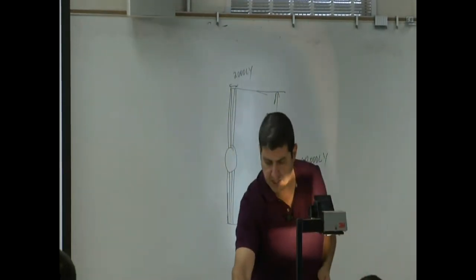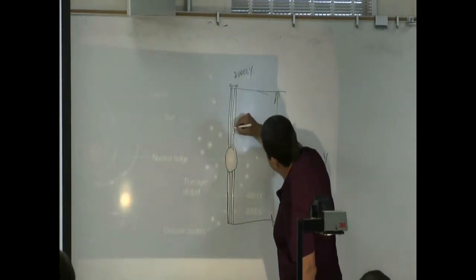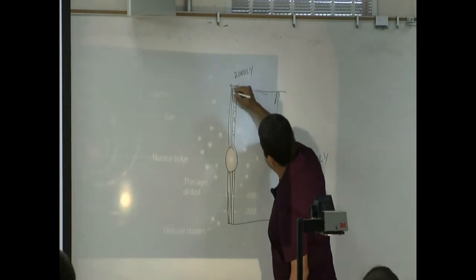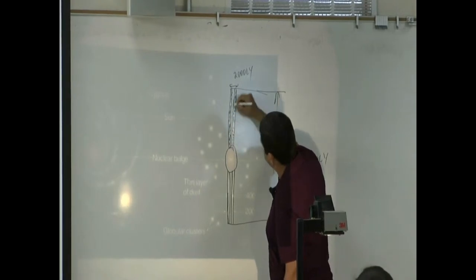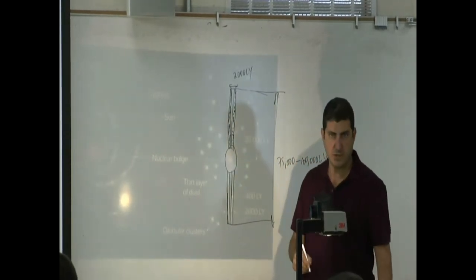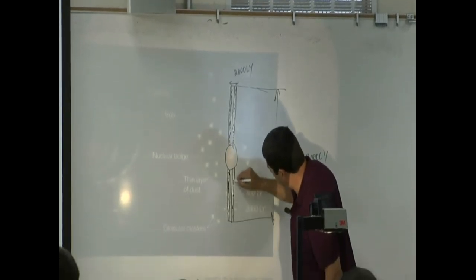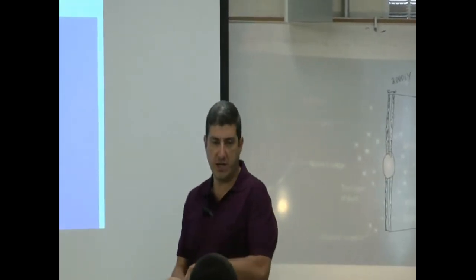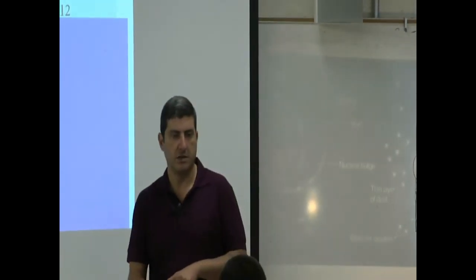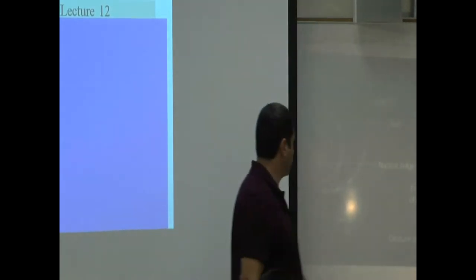The other thing we notice is that there's a bunch of stars here, a bunch of stars here, and then there's a gap in the middle. Same thing here: bunch of stars here, bunch of stars here, gap in the middle. We've noticed these kinds of gaps before. The asteroid belt had gaps in it, Saturn's rings had gaps in it called the Cassini division. So it seems to be common, and there's a gap there.